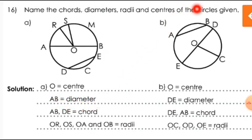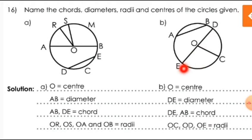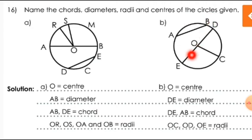The same way we can write the center, diameter, chord, and radii of the second circle also. Here O is the center, and DE or ED is the diameter. Then DE and AB are the two chords. And OE, OC, and OD — these three are the radii.